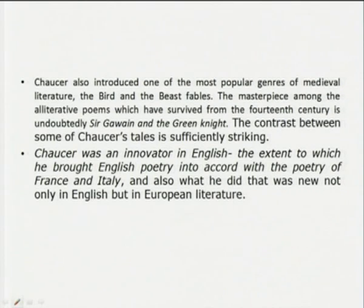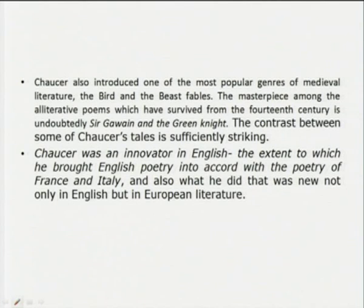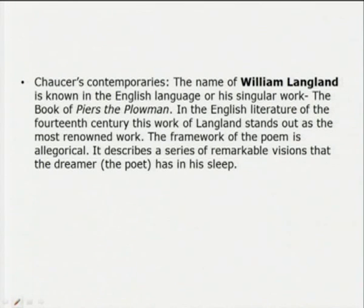Another contribution of Chaucer in medieval literature was how he introduced the bird and beast fables. The masterpiece among the alliterative poems which have survived from the 14th century — apart from Chaucer — is Sir Gawain and the Green Knight. Chaucer was an innovator in English: he brought English poetry into accord with the poetry of France and Italy. William Langland is known in the English language on the strength of his singular work, the Book of Piers Plowman, which stands out as the most renowned work of 14th century English literature.